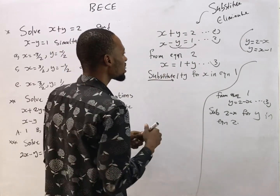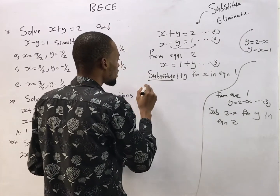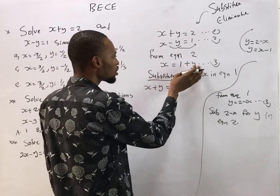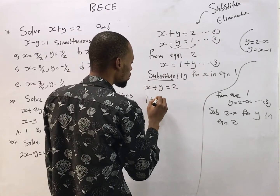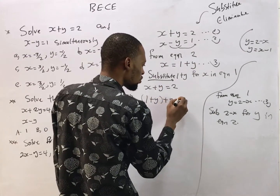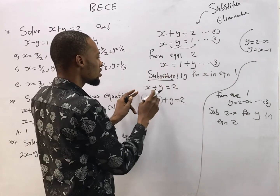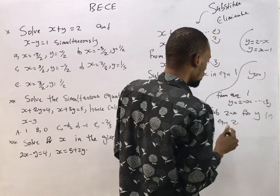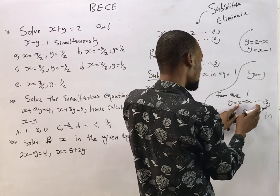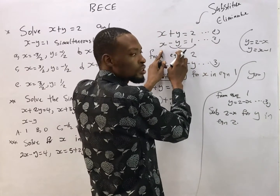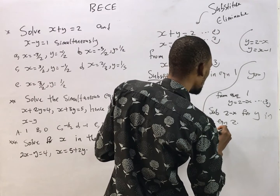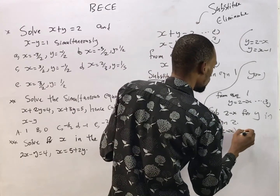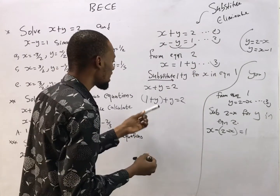Equation 1 is s plus y equals 2. Instead of s, we put the new value 1 plus y, to have: 1 plus y plus y equals 2 — we've substituted s as 1 plus y. For the alternative approach, from equation 2, s minus (2 minus s) equals 1, putting 2 minus s in place of y.